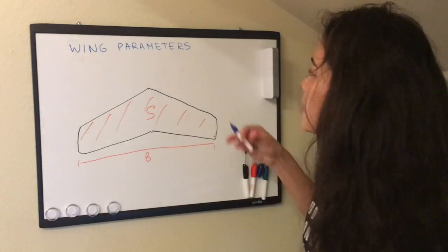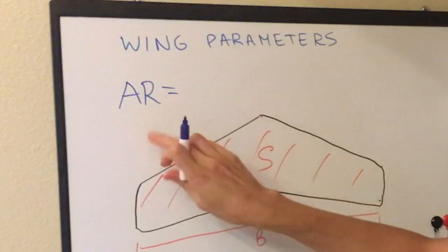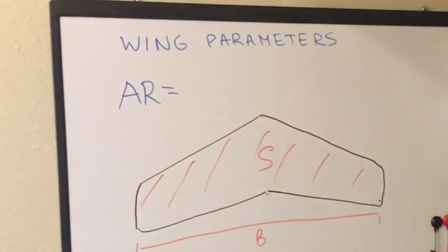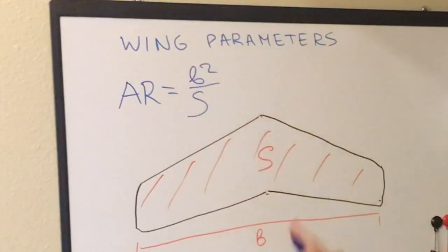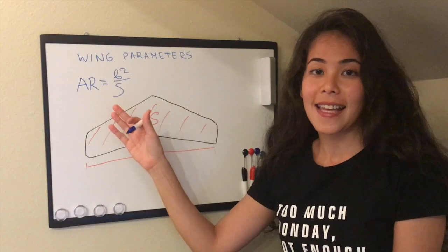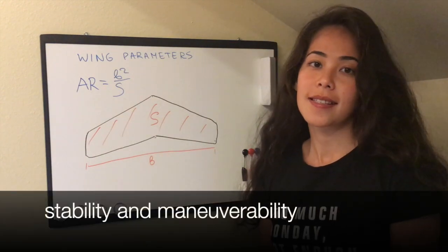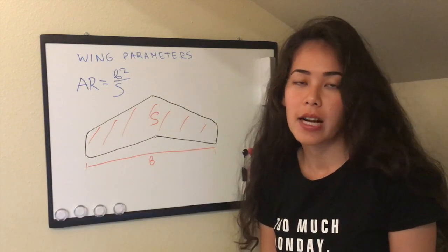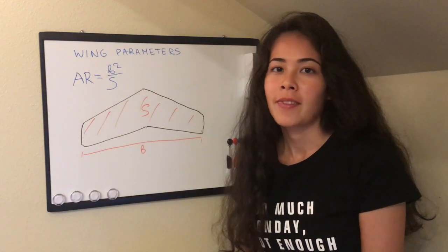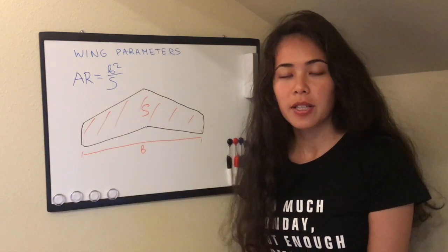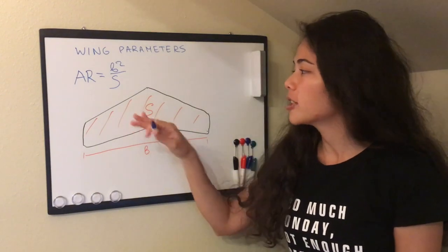Aspect ratio is denoted by capital AR together, and it equals b squared divided by capital S. Aspect ratio is a very important parameter because it determines the stability and maneuverability of the aircraft. We will solve a problem about aspect ratio in the next video, and you will see how aspect ratio differs for different aircraft.